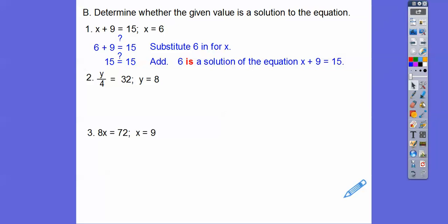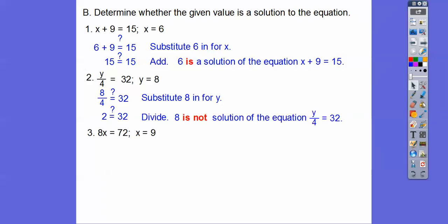So now we're going to plug in y equals 8 right here. So y over 4. So when we do that, 8 over 4. So 8 over 4 is the same as 8 divided by 4. So when we divide 2, now 2 doesn't equal 32. So 8 is not a solution of the equation y over 4 equals 32.